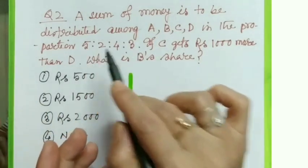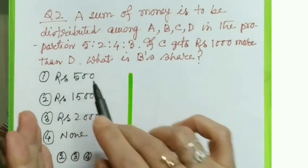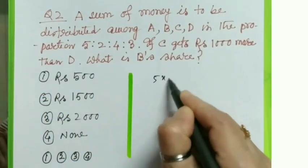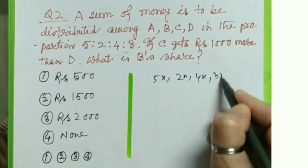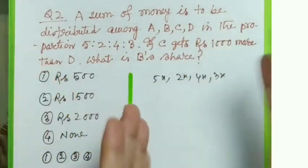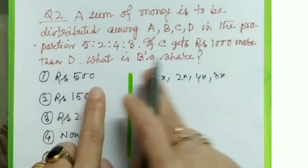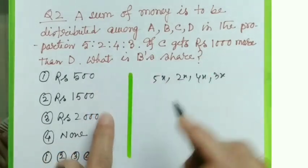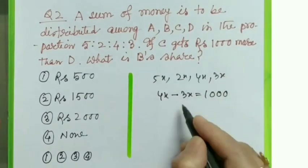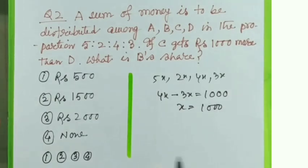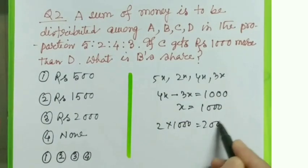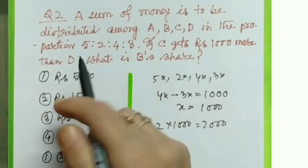Question 2: A sum of money is to be distributed among a, b, c, d in the proportion 5:2:4:3. If c gets rupees 1000 more than d, what is b's share? Let the shares be 5x, 2x, 4x, and 3x. The condition states c gets 1000 more than d, so 4x minus 3x equals 1000, which gives x equals 1000. Therefore b's share is 2x = 2×1000 = rupees 2000. Option 3 is the correct answer.